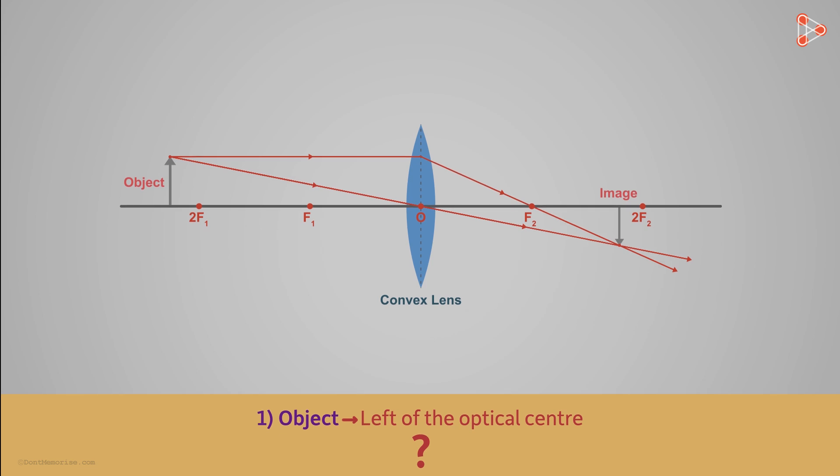Can you guess the second convention? Second convention that we follow is that we measure all the distances from the optical centre. For instance, if we take this point on an object, then the distance of this point from the lens is measured from the optical centre of the lens like this.